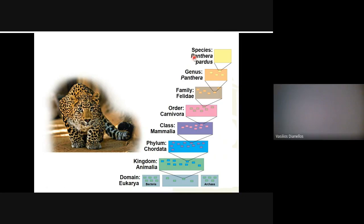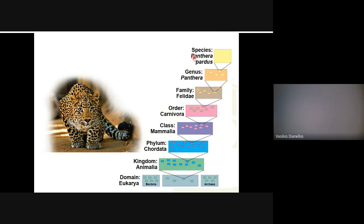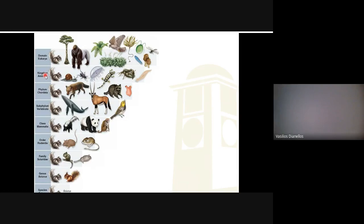This next picture is another example of what we just talked about but not from your book. You start big and get small: the domain Eukarya includes all eukaryotes — animals, plants, fungi, protists — and then it gets smaller and smaller as you get more specific. Your book also points out that the criteria used to put different species in these different categories is ultimately arbitrary, meaning humans have decided that.